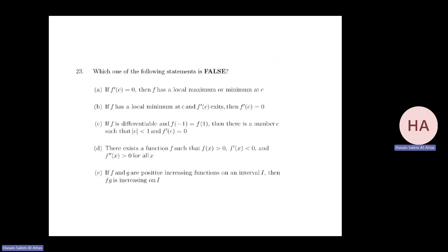Which of the following is false? The statement 'if f prime equals 0 then there is a local maximum' is false — for f(x) = x³, f prime(0) = 0 but there is no local maximum or minimum at x = 0. The correct direction is the converse. The other statement we just proved is correct.